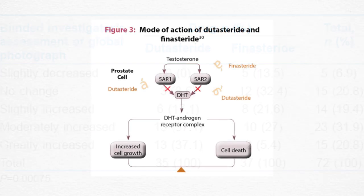Systemically, dutasteride may lower DHT in the male body by upwards of 90%. Some people may find additional success with dutasteride because for them there may be some type 1 5-alpha reductase activity in their scalp. Certain drugs such as finasteride, minoxidil, and topical antiandrogens can impact the hair growth cycle.